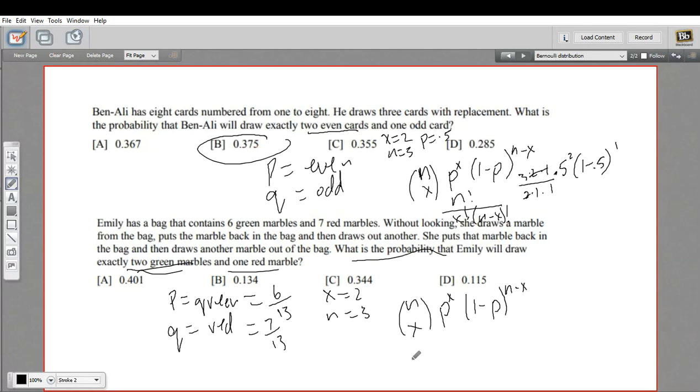Let's write it out. n choose x is n factorial: n is 3, so we have 3 times 2 times 1 over x factorial, which is 2 times 1, times n minus x factorial, which is 1. This cancels to just 3. p to the x: the probability of success is 6/13, raised to the second power. 1 minus p is the failure probability, 7/13, raised to the first power since n minus x is 3 minus 2.